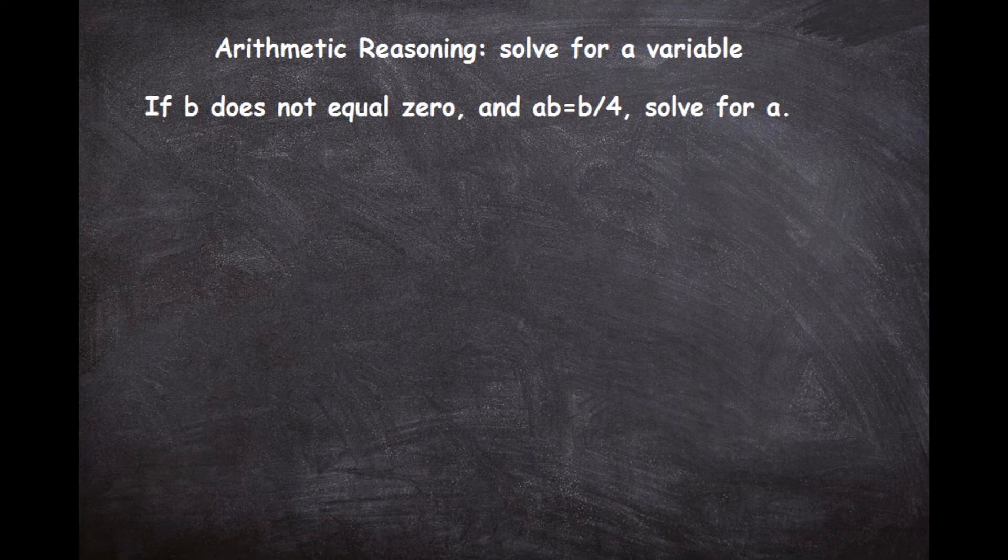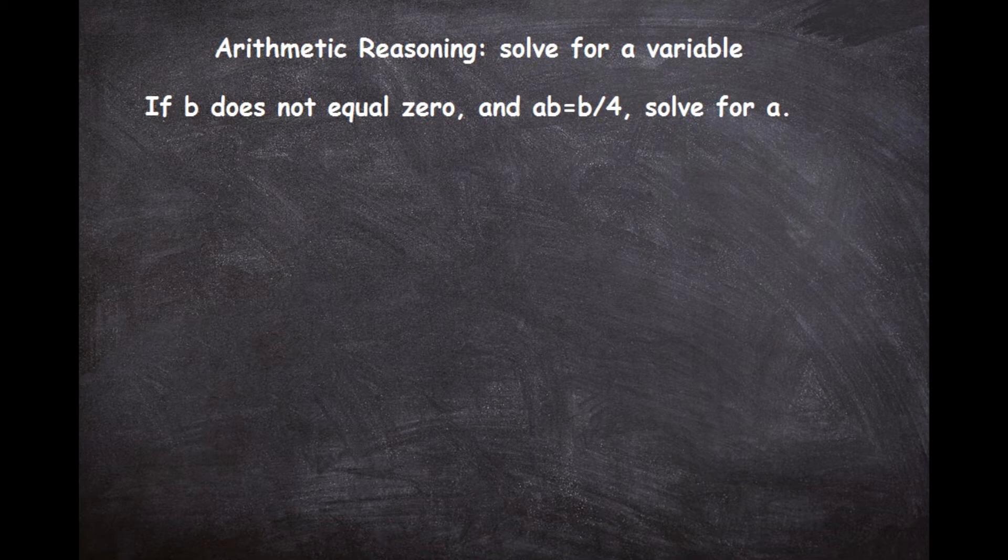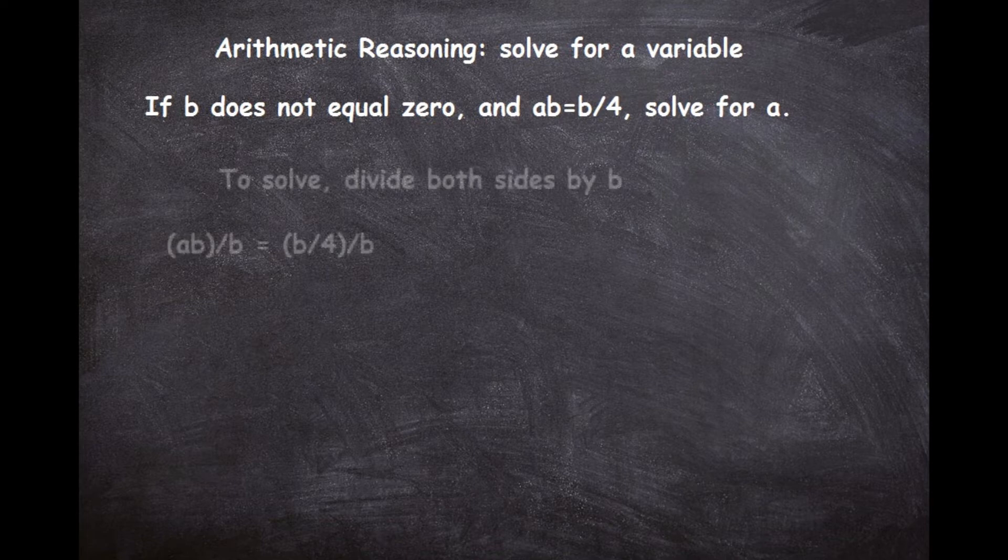It's pretty easy to solve this. All you'll have to do to get a by itself is get rid of that b. So if we look at the b on the left-hand side, to get rid of it to isolate a, all we'll need to do is divide by b on both sides.